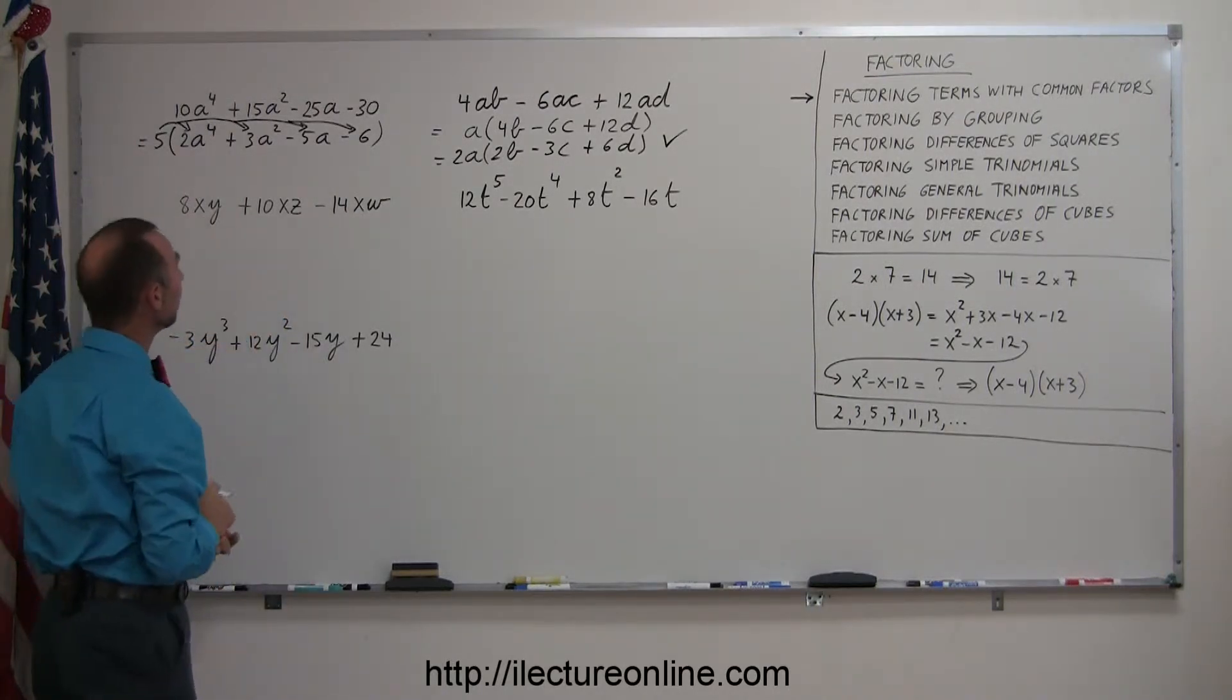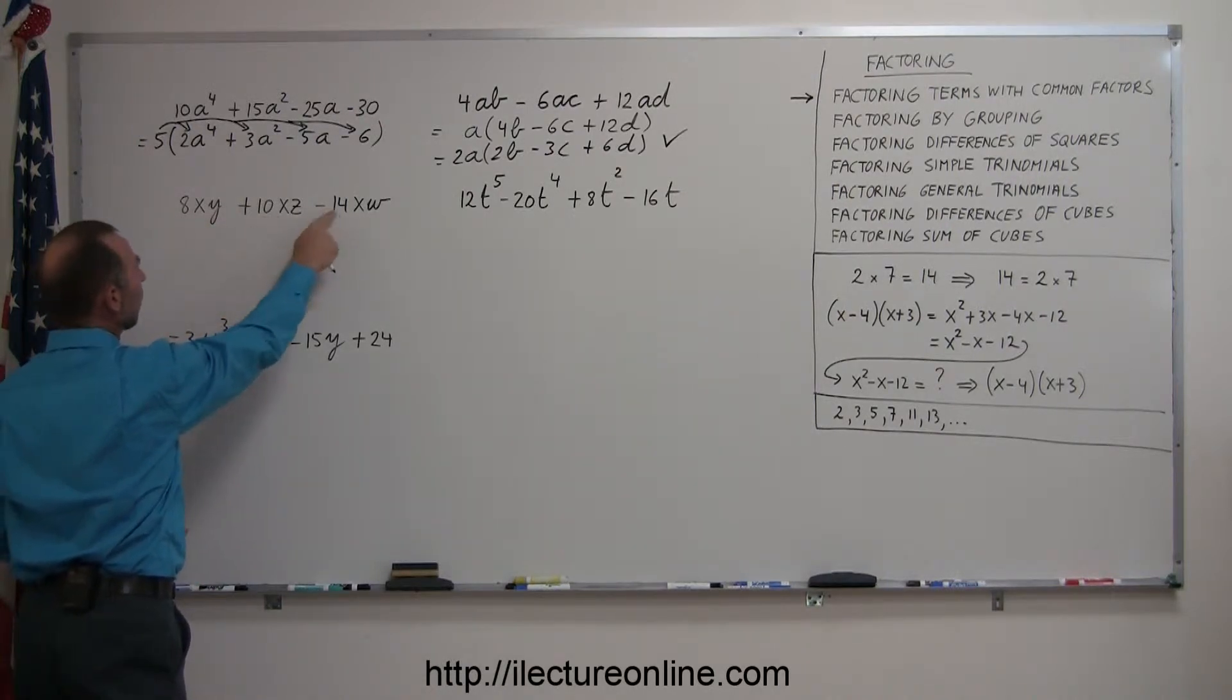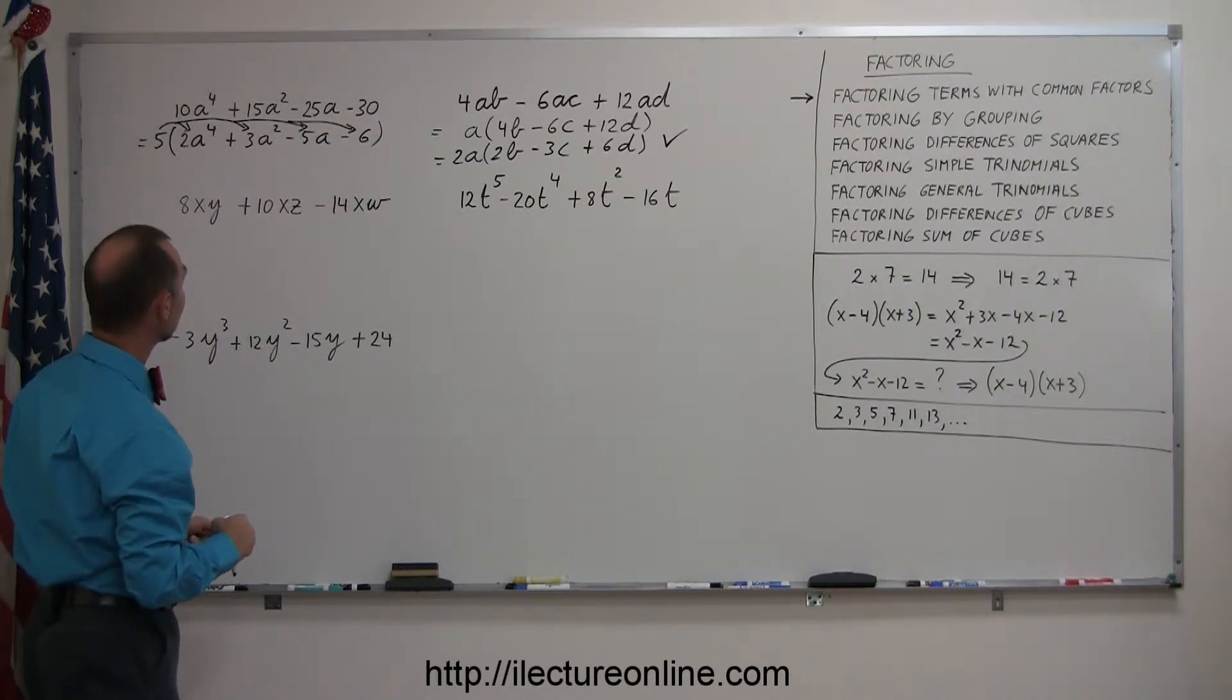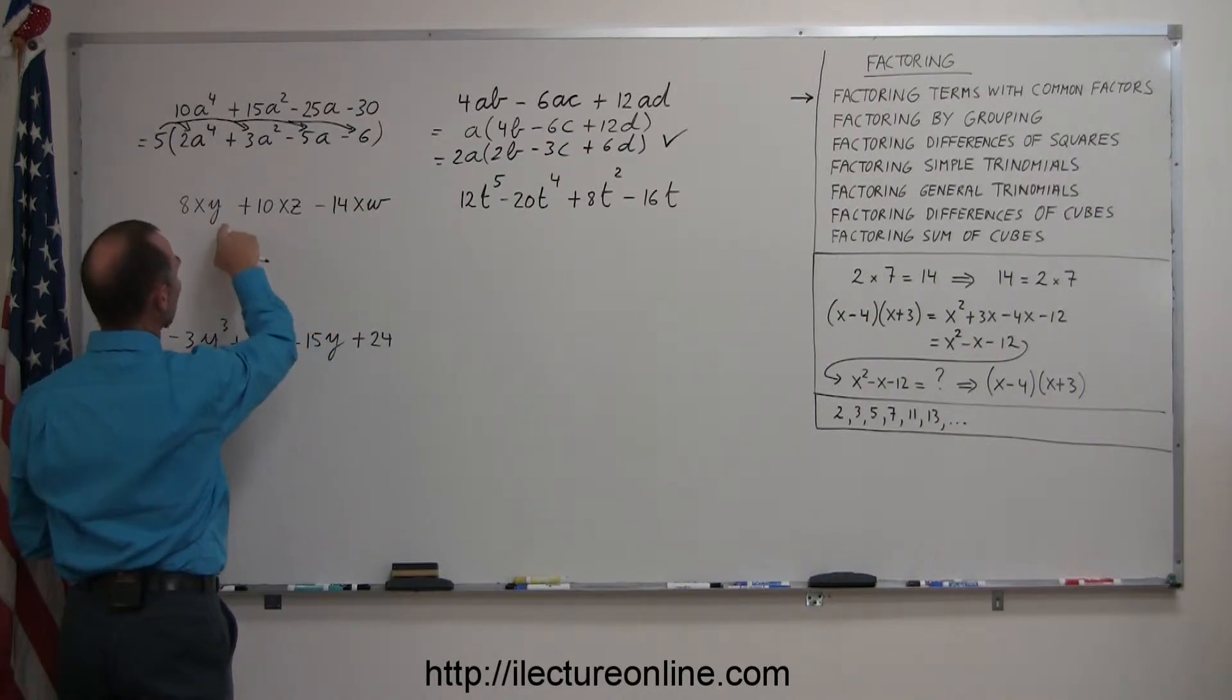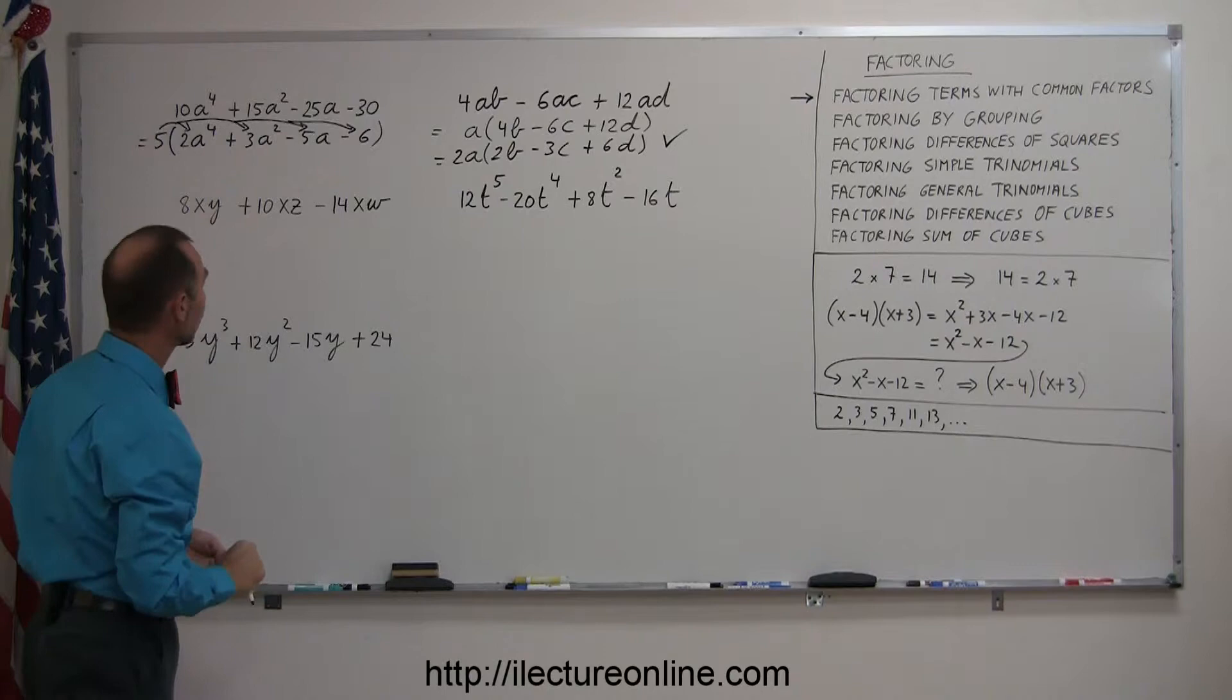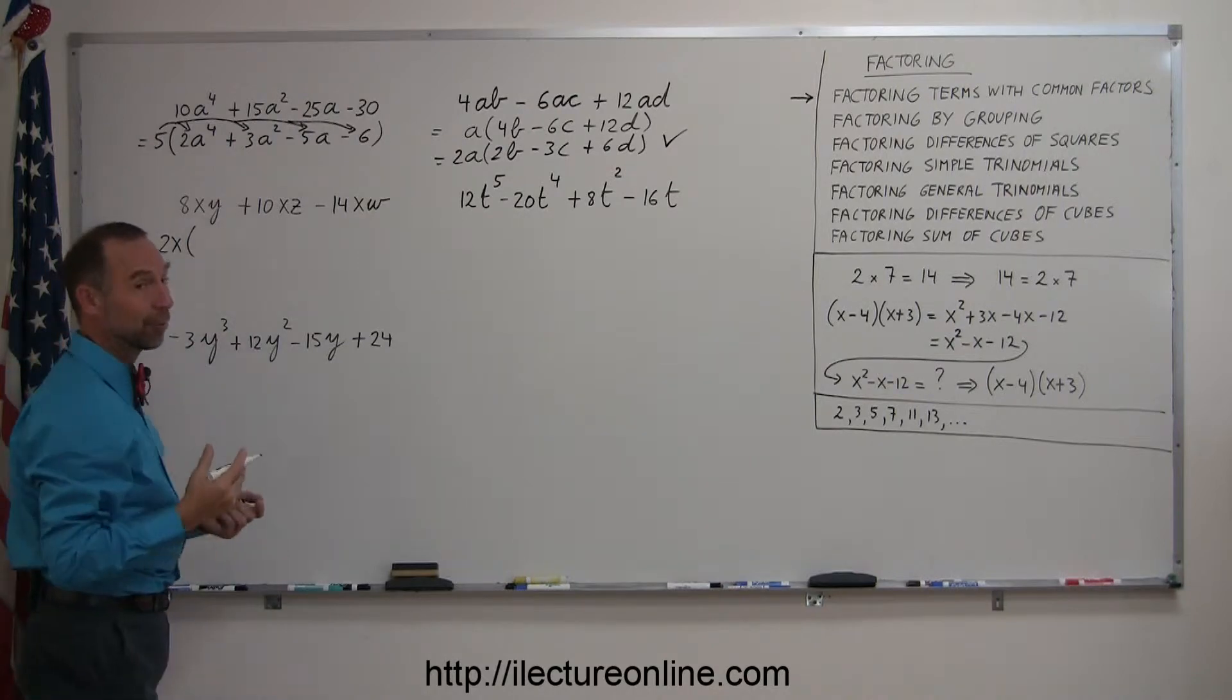All right, moving on to the next example. Again, I look at the numbers, I see they're even, so I can probably factor out the number 2. Any variables that are common, I see an x here, an x there, and an x there. I can factor out an x, but the y, the z, and the w, that only appears in one of the three terms, so I cannot factor those out. So now I can rewrite this as 2x times, and see what I have remaining.